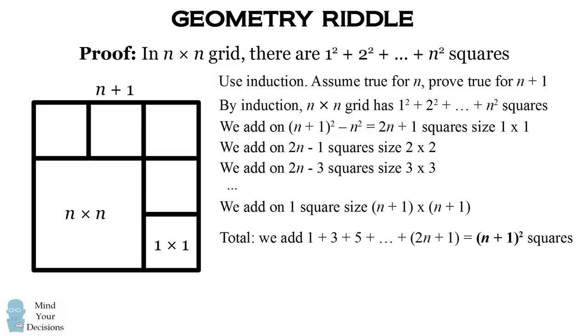So the total number of squares we can add on is the sum of the odd numbers up to 2n+1, and that's a well-known formula of (n+1)². So we've added on a total number of (n+1)² squares. So in total, in an (n+1) × (n+1) grid, we have the same formula plus (n+1)², and that completes the induction.